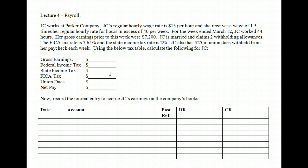You probably refer to those as Social Security and Medicare or Medicaid. So OASDI is what we commonly refer to as Social Security, and HI — Hospital Insurance — is the Medicare/Medicaid insurance. Though your textbook may use different rates, as they are subject to change each year. Remember, these are set by law.